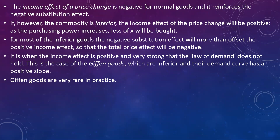The income effect of price change is negative for normal goods and it reinforces the negative substitution effect, so the total price effect will be negative for normal goods. But if the commodity is inferior, the income effect of price will be positive — as purchasing power increases, less of the commodity will be bought. For most inferior goods, the negative substitution effect will be greater than the positive income effect, so the total price effect is also negative. There are some special inferior goods called Giffen goods, where the law of demand does not hold because the demand curve has a positive slope; these Giffen goods are very rare in practice.